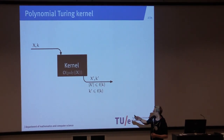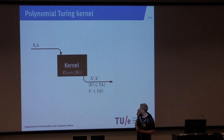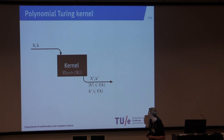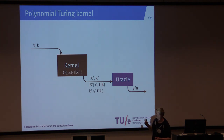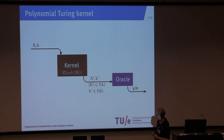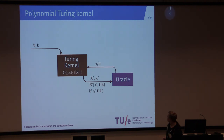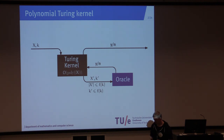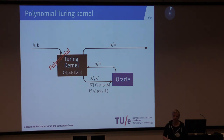So we know what a kernel is. It takes as input an instance X with parameter k and as output an instance X' with parameter k', such that the size of the new instance and the new parameter are both bounded by a function of the original parameter. And a Turing kernel, combined with an oracle that can answer small problem instances, can solve any instance with a small parameter. A Turing kernel can communicate with this oracle, ask it multiple queries, and eventually give an answer itself. We are interested in polynomial Turing kernels, meaning the size of the query needs to be bounded by a polynomial function.